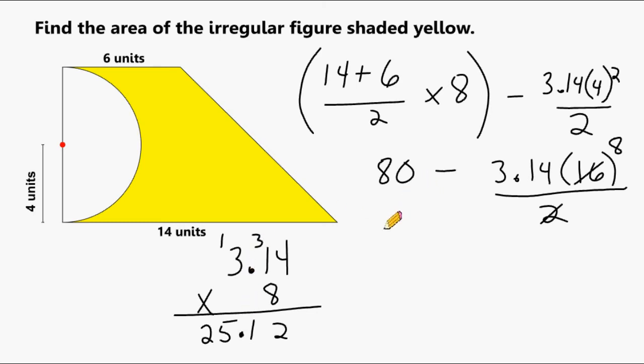So now what we have to do is take 80 and subtract from it an area of 25.12 square units. And after subtracting these two values together, that's going to end up giving us 54.88 square units.